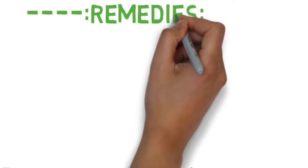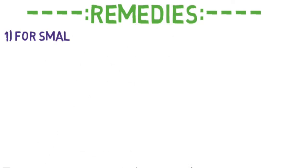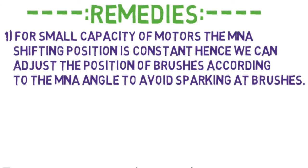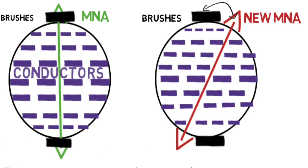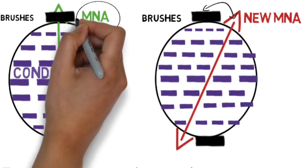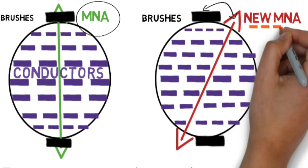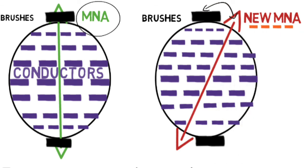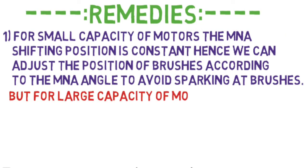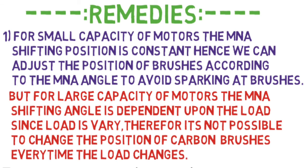The remedies for armature reaction are: First, for small capacity motors where the MNA shifting position is approximately constant, we can adjust the position of brushes according to the MNA angle to avoid sparking. Brushes are placed along the MNA, and since armature reaction shifts the MNA, we set the brush position to the new MNA to avoid sparking. However, for large capacity motors, the MNA shifting angle depends on load, and since load varies, it is not practical to reposition brushes every time.